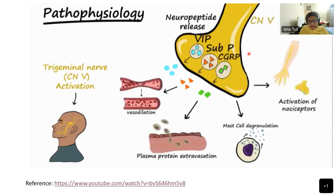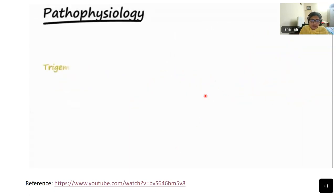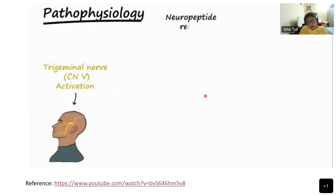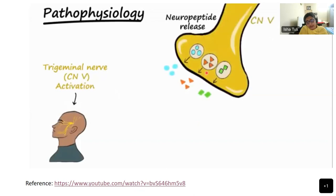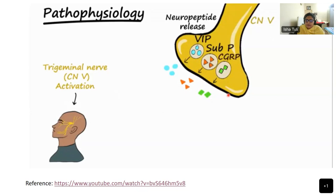Vasoactive peptides are released by the trigeminal C fibres which innervate the vasculature of the head and nerve, causing local extravasation of inflammatory neuropeptides — substance P, VIP, and CGRP. Many migraine therapies target these individual neuropeptides in order to prevent or abort the attack. These neuropeptides promote neurogenic inflammation, protein extravasation, and vasodilatation in the cerebral cortex, activation of neuroreceptors, and tingling sensations in the arms and limbs.